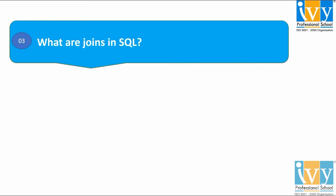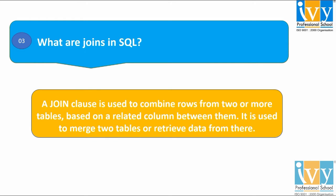The third question says: what are joins in SQL? A join in SQL is used to combine rows from two or more tables based on a related column between them. It is used to merge two tables or retrieve data from there. A join clause in SQL corresponds to a join operation in relational algebra.